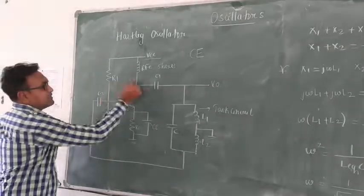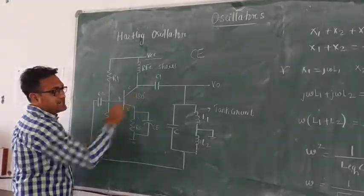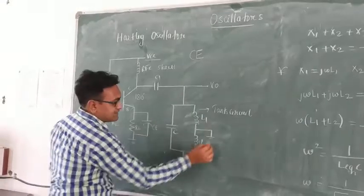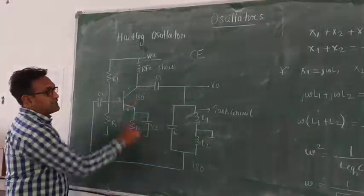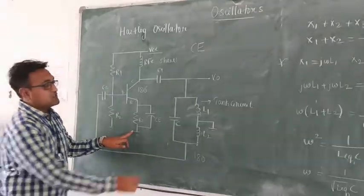Now next, so this amplifier circuit will use a phase shift of 180 degrees and this tank circuit will use a phase shift of 180 degrees. So again, 180 degrees plus 180 degrees is about 360 degrees phase shift.